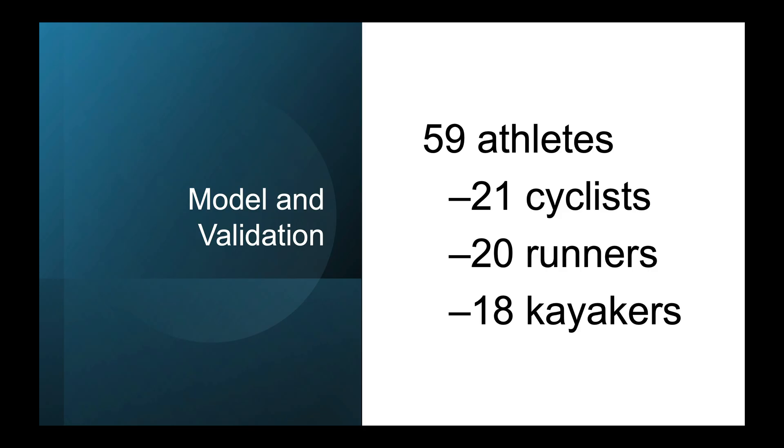So the next step was to build models, and then test them in a new group of athletes. The models for each measure of training load were slightly different, but typically included some measure of fitness like VO2 max or VT2, along with session duration and or sex or prior day training load. You can read more about the specifics in the paper. What I'll show you next are the results as predicted versus actual values for each participant and each measure of training load in the validation study.